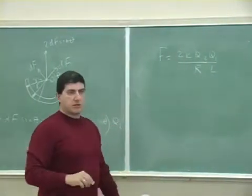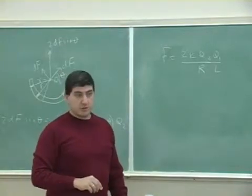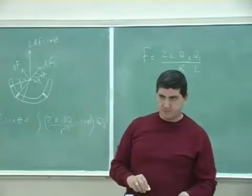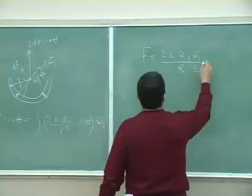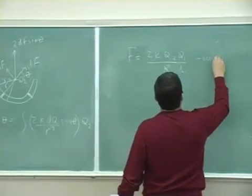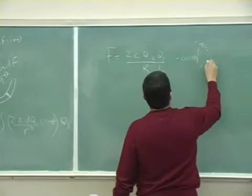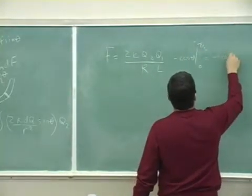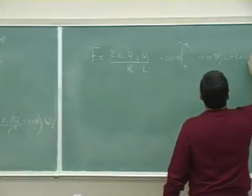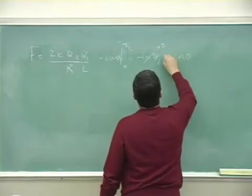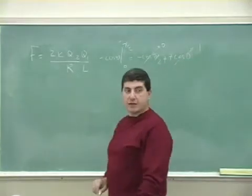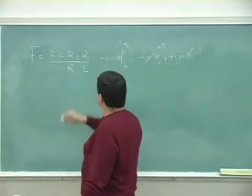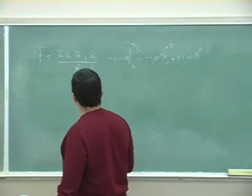The integral of sinθ from 0 to π/2 equals 1, because the antiderivative is −cosθ evaluated from 0 to π/2: −cos(π/2) − (−cos(0)) = 0 + 1 = 1. So the integral is just 1 and everything simplifies. The final answer is F = 2k·q₁·q₂ / (r·L).